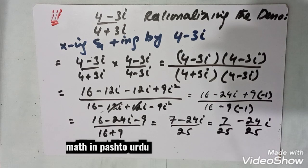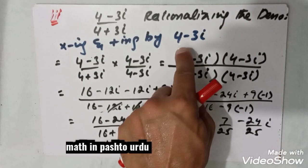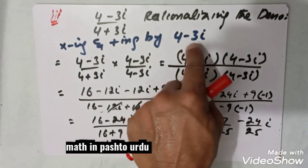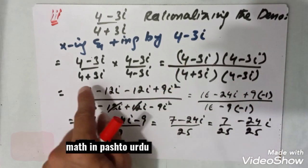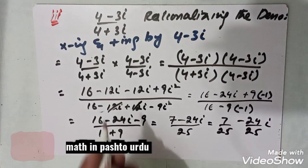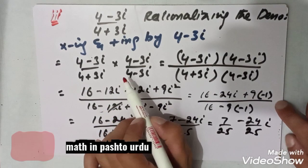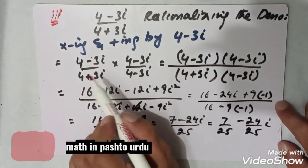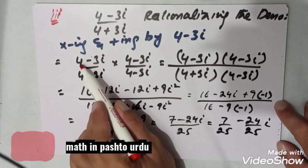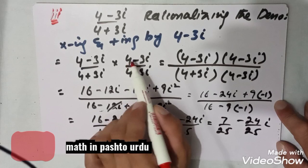To rationalize, we have to multiply and divide by the conjugate of the denominator, which is (4 minus 3 iota). Let us multiply by (4 minus 3 iota) in both the numerator and denominator.